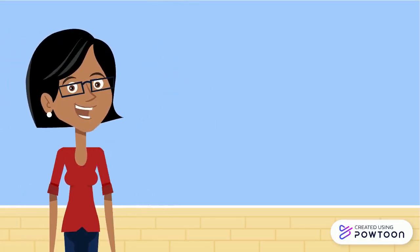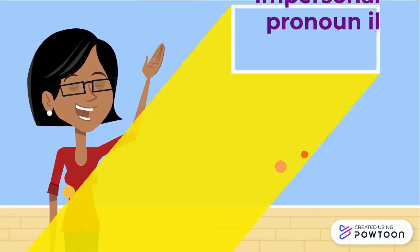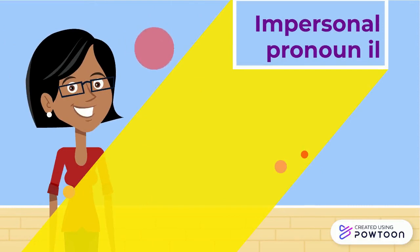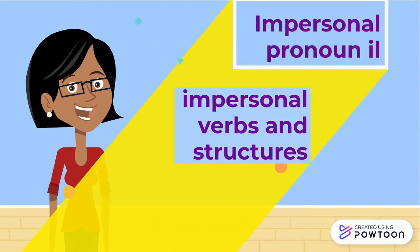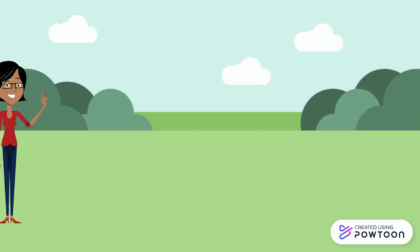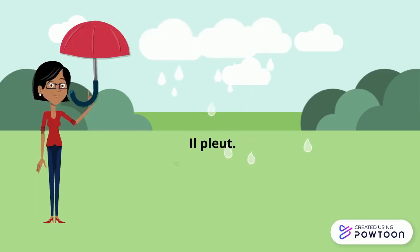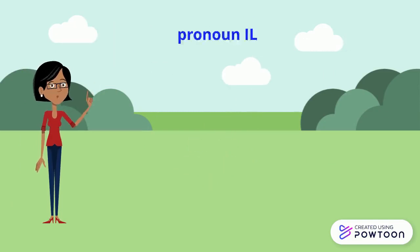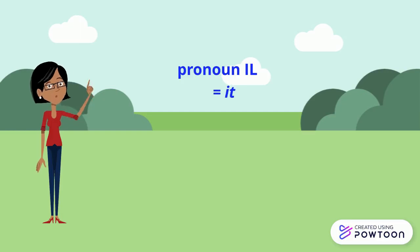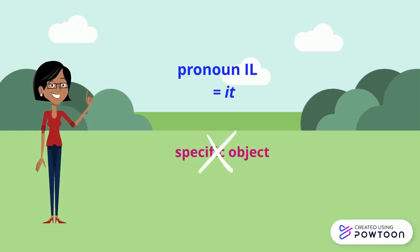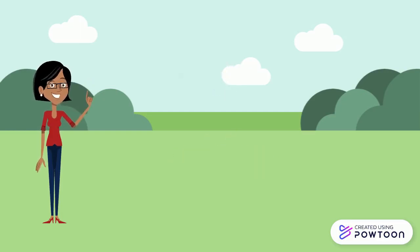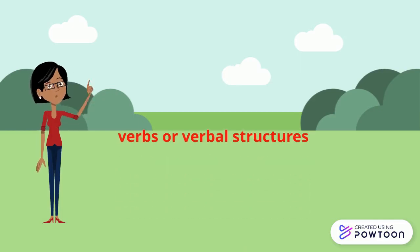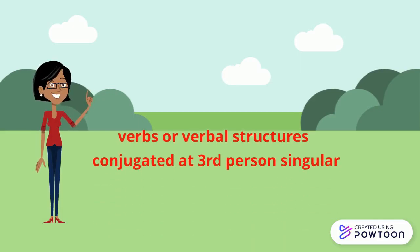Bonjour! In this video we are going to talk about the impersonal pronoun il as well as impersonal verbs and structures. If I say il pleut, it is raining — who is performing the action of raining? No one. The pronoun il, 'it', does not correspond to any specific object.